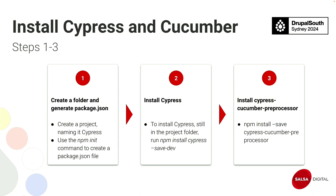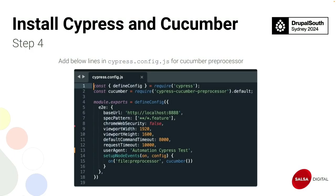First, create the package.json file by running npm init — it will generate the package.json file. Second, install Cypress with npm install cypress --save-dev, which will install it as a dev dependency. The third and most important step is the Cypress Cucumber preprocessor, which can be installed with npm install --save cypress-cucumber-preprocessor. The fourth step is creating the cypress.config.js file, where you write the base URL of the site you want to run tests on, the spec pattern pointing to the feature files, and the viewport width and height.